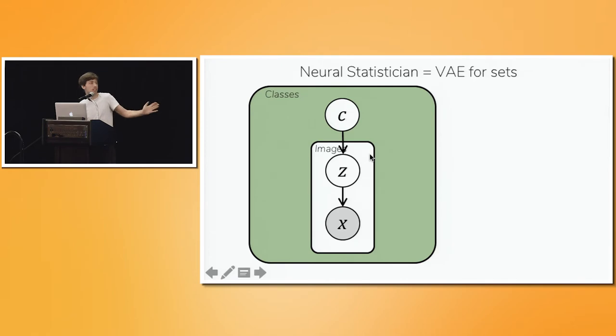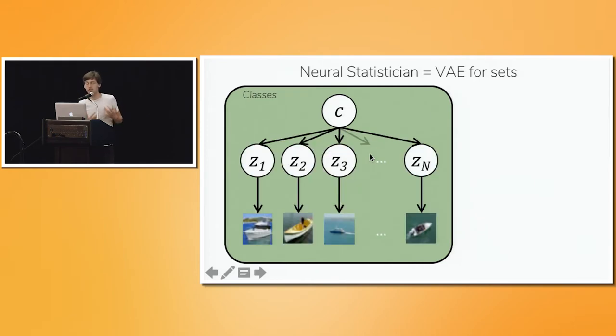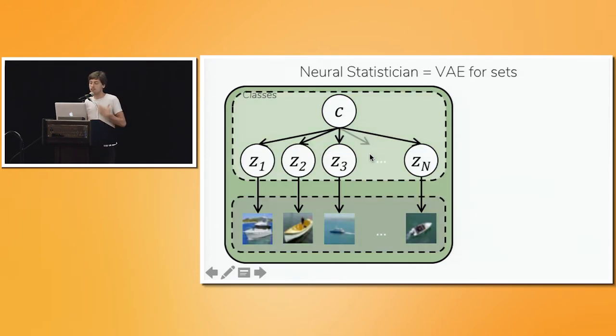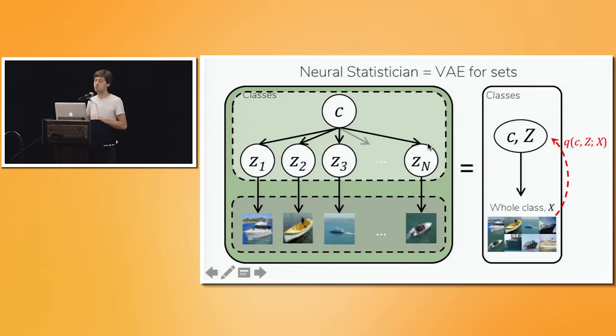So for that they need all of the observations to be independent of each other, which obviously isn't true for x's in the same class. And so to make that independence happen in the Neural Statistician, they essentially unroll this inner plate. So this is showing all of the variables for one class. And then they regroup everything. So you can think of all of the images from a single class as comprising one observation, an observation of a set. And you can think of all of these z's and the c as a single latent variable to describe that set. And now it looks just like a variational autoencoder, where x is a set, and the latent variable has some structure to it.